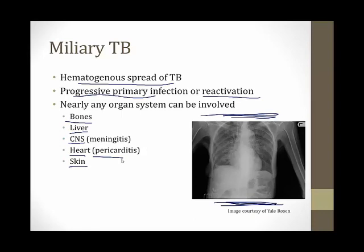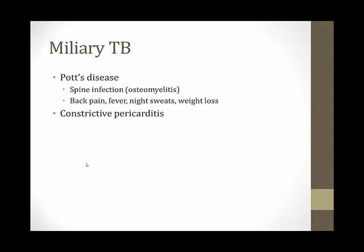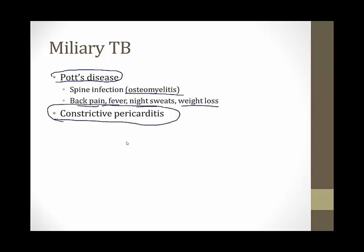Miliary TB is very rare in the modern era, but was much more common before antibiotic therapy. Two specific manifestations to know: Pott's disease — spread of TB to the spine causing osteomyelitis, with back pain, fever, night sweats, and weight loss. TB can also spread to the pericardium, causing pericarditis or constrictive pericarditis.